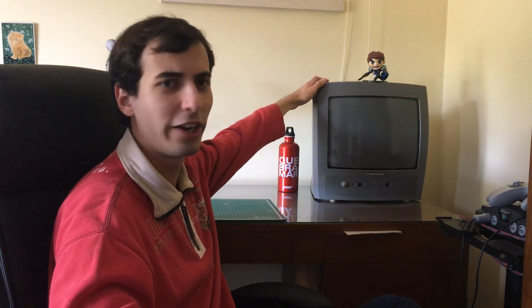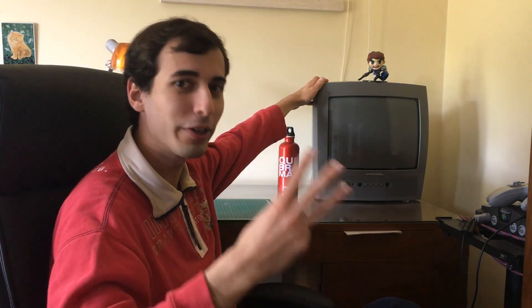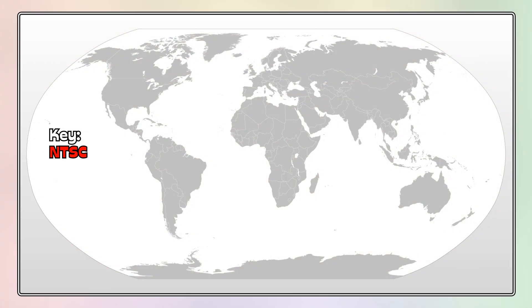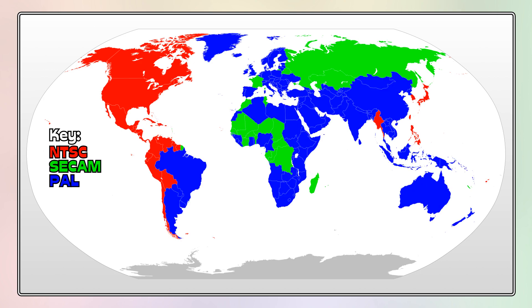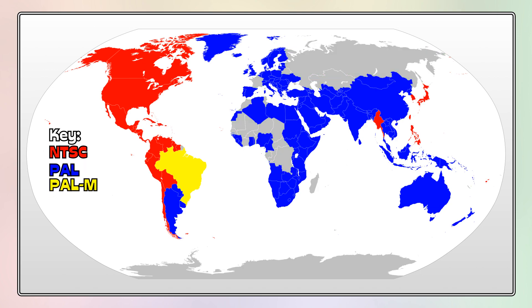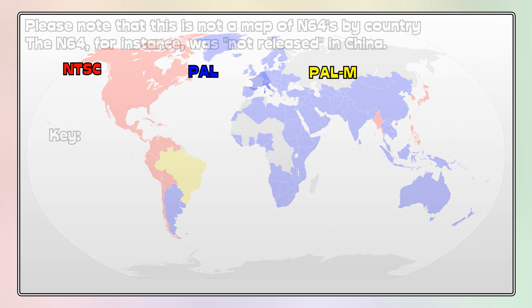Back when we had analog TVs that looked like giant unwieldy boxes, there were three main television standards. NTSC, used notably by Japan and most of America. SECAM, used by a few Asian and African countries as well as France for some reason. And PAL, used by everyone else except Brazil. Brazil uses a variant called PAL-M. There are no SECAM N64s — France instead has PAL N64s. So we can focus on these three formats.